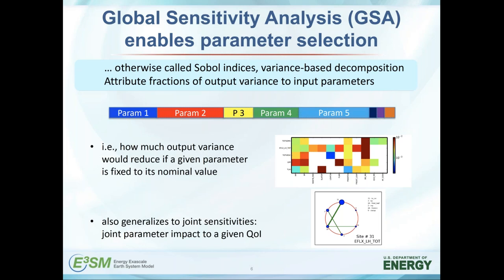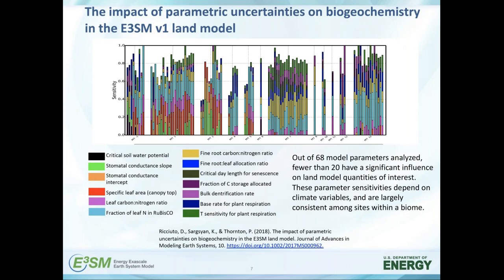Those are some results from prior work done with Dan on ALM. To emphasize this more — this is a paper from about a year ago with Dan Ricciuto. We looked at several Fluxnet sites with varying plant functional types and performed automated sensitivity analysis varying 68 model parameters. That's a huge challenge in terms of surrogate construction because 68 is considered a large number. However, we have advanced methodologies with sparse surrogate construction that allows us to build meaningful and relatively accurate surrogates across all these sites.